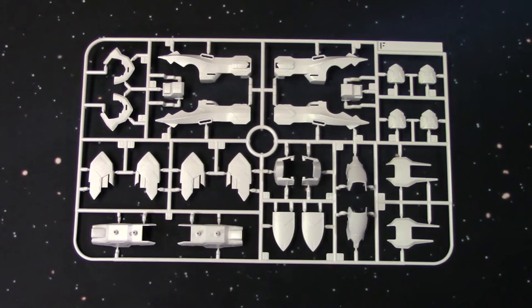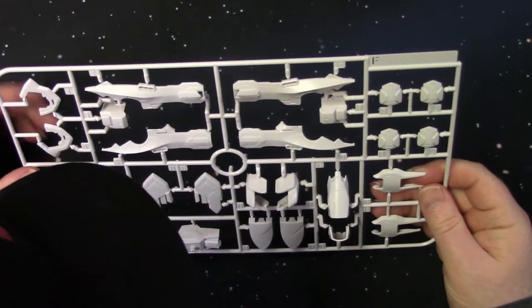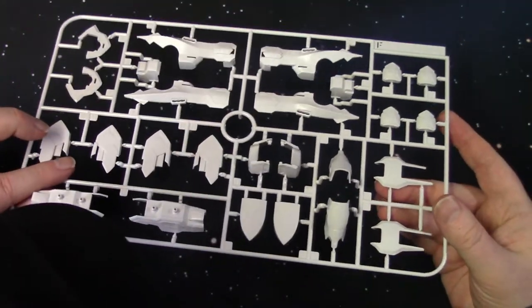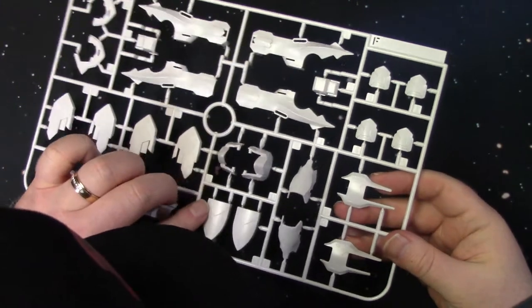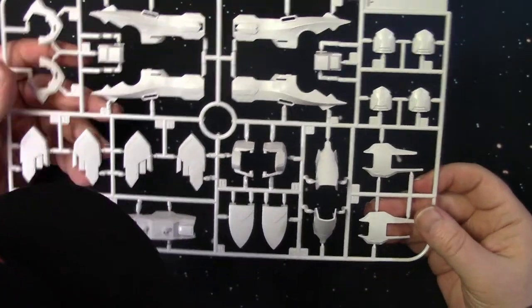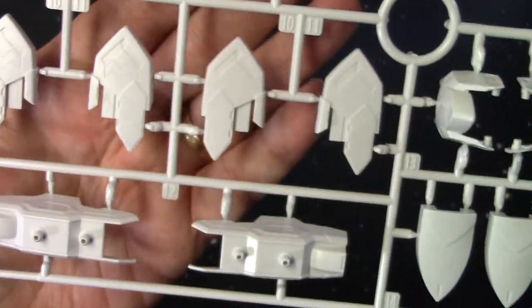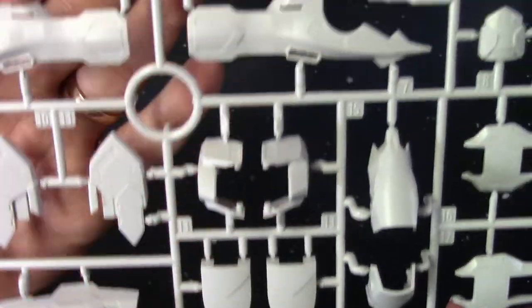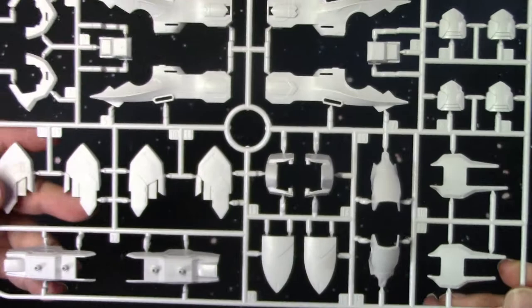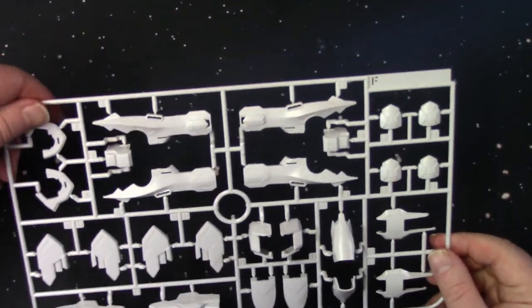Here we have the F sprue. And again, more parts. There's some arm parts there, backpack parts, side skirts and vents, cool. Again, there is a lot of detail on these bits. And I don't know if you can see it. It's probably washing out because it's white, but there's a lot of panel lining detail. I don't know if it's master grade level, but somewhere in between a high grade and a master grade.